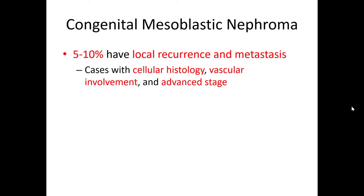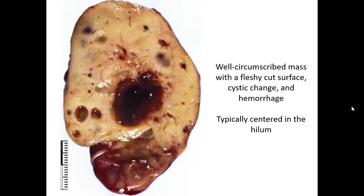These tumors are malignant. Around 5–10% will show local recurrence and metastasis consistent with malignancy. In cases with a more cellular histology, cases with vascular involvement, and cases that are more advanced stage are more likely to have local recurrence and metastatic disease. These tumors tend to be well circumscribed, relatively large, and can have areas of cystic degeneration and necrosis. They are typically centered in the hilum of the kidney.